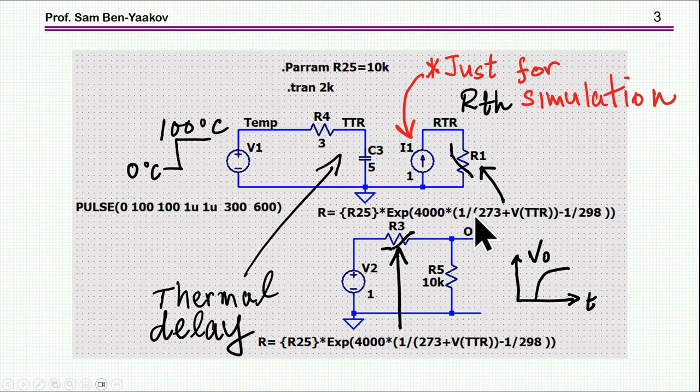Again, this is explained in the first video. I'm feeding it with 1 amp. This is just for simulation. You don't want to feed 1 amp into a thermistor because it will get hot. This is just to get a voltage here which represents the resistance of the thermistor. This is just for simulation. Now I'm also showing here a circuit for actually measuring temperature. This is a constant voltage. This is the thermistor again. I'm using the same thermistor. Here is the equation. Here is the divider. And here is the output.